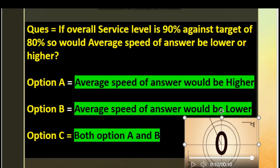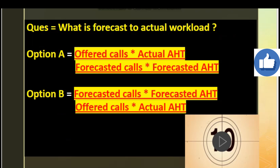The correct answer is Option B: average speed of answer would be lower. If service level is 90% against a target of 80%, it means that all the calls are getting answered as soon as possible and customers are not waiting on the line. So average speed of answer would be lower when service level is higher.